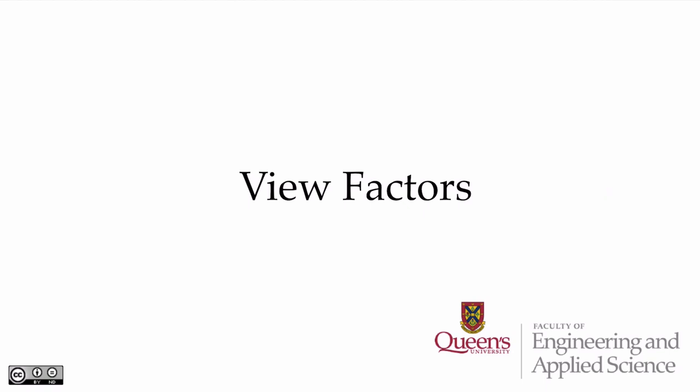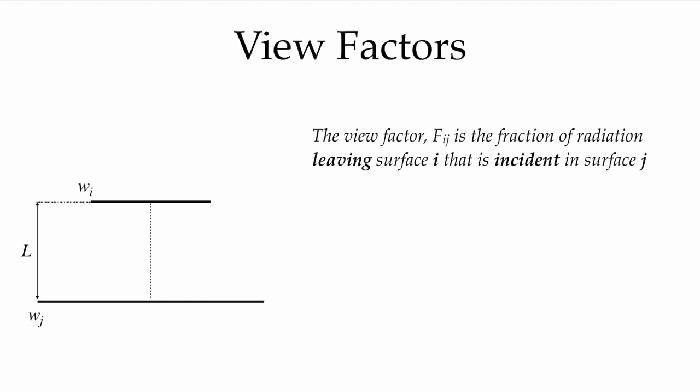In this video we're going to look at view factors, which are essential in calculating the radiation exchange between surfaces. The view factor Fij is defined as the fraction of radiation which leaves surface i that is incident on surface j. Of all the radiation leaving surface i, some will miss surface j and some will hit it, and the fraction that hits j is by definition the view factor Fij.